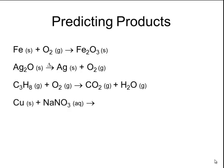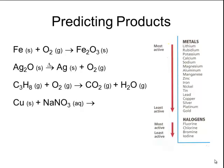In the next reaction, I have copper combining with sodium nitrate. Here I have one element and one compound, which is typical of a single displacement reaction. In order to determine whether this reaction will occur, I need to look at an activity series.